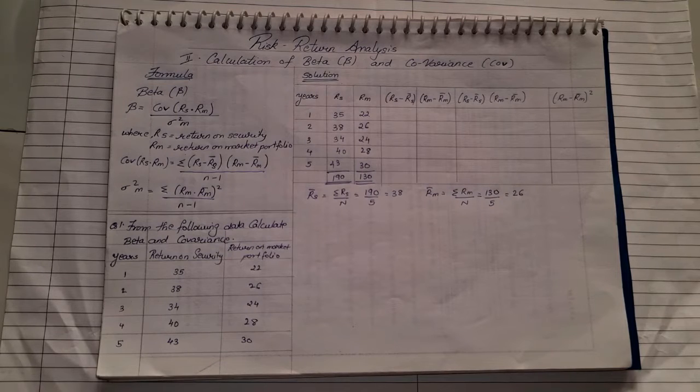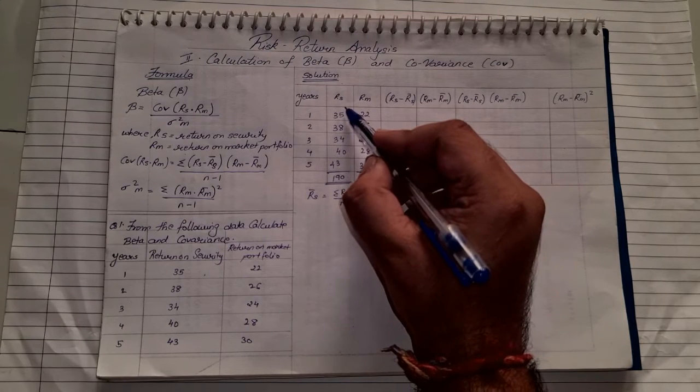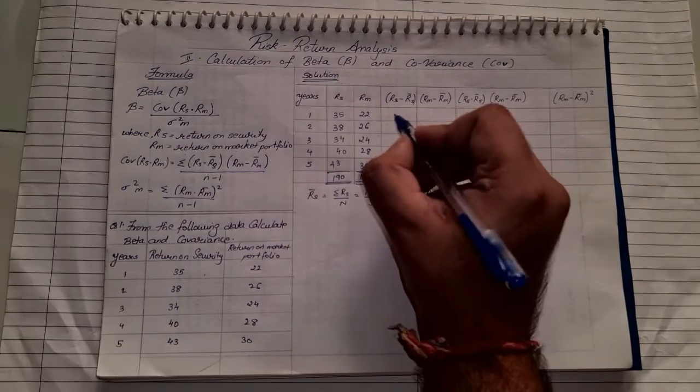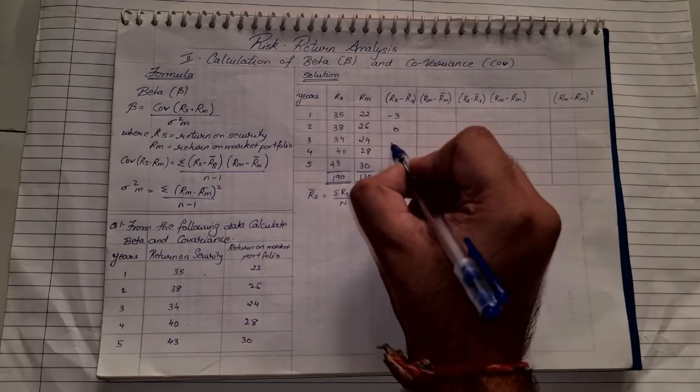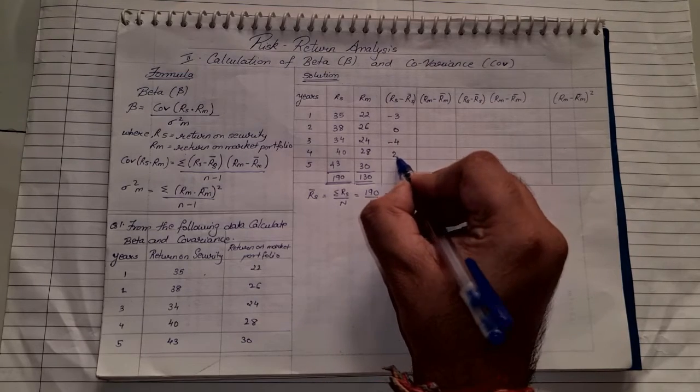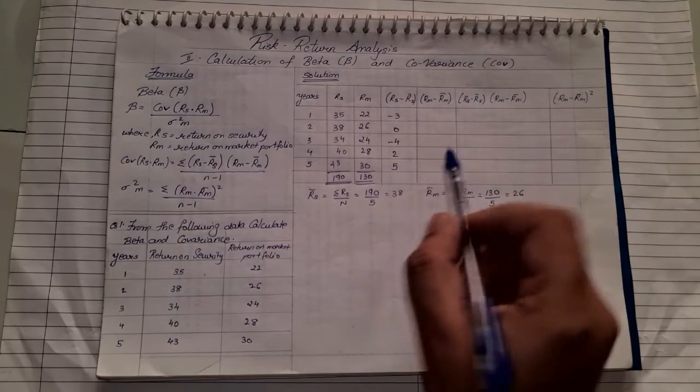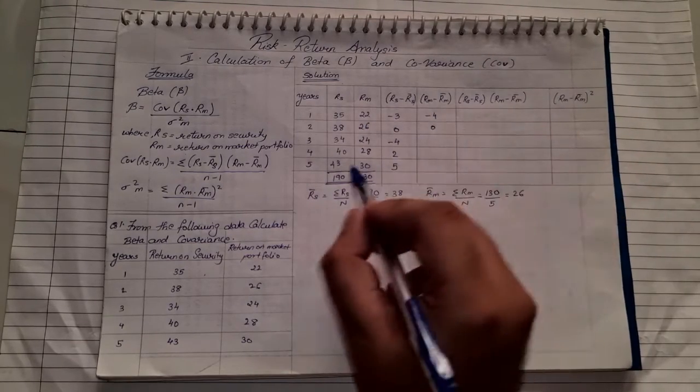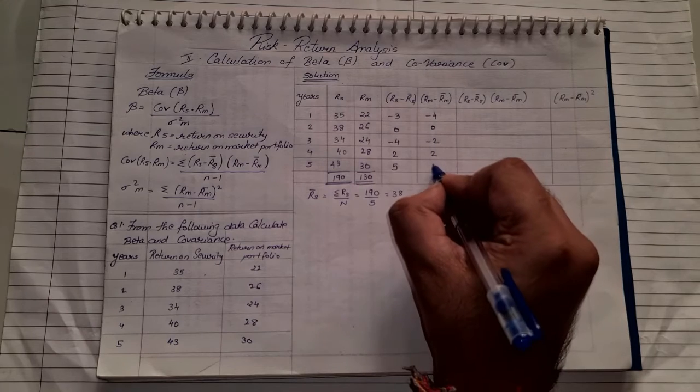That is the first step. Once we have the averages of return of security and market, we can go to the next column. Our next column is RS minus R̄S, so each return we subtract by the average return: 35-38 = -3, 38-38 = 0, 34-38 = -4, 40-38 = 2, 43-38 = 5. Similarly for market: 22-26 = -4, 26-26 = 0, 24-26 = -2, then positive 2, and lastly positive 4.